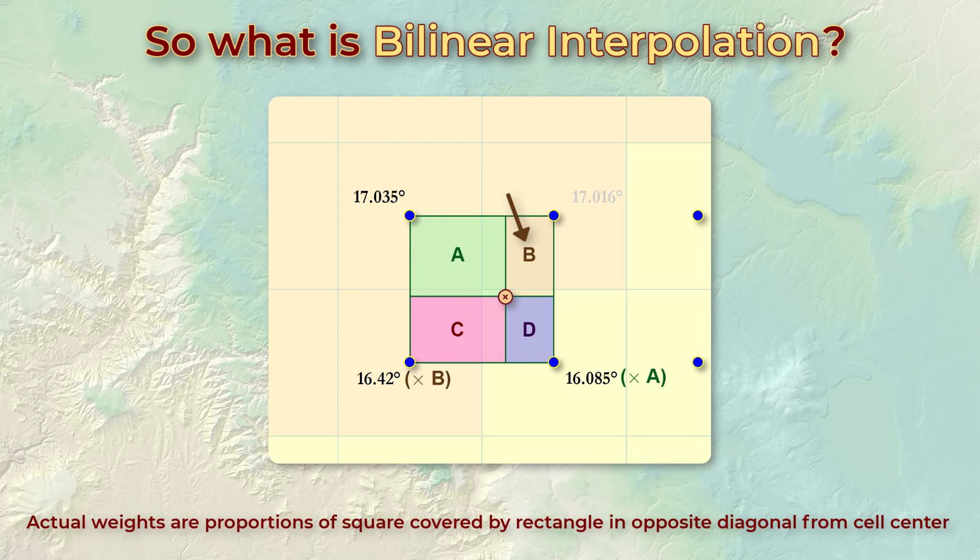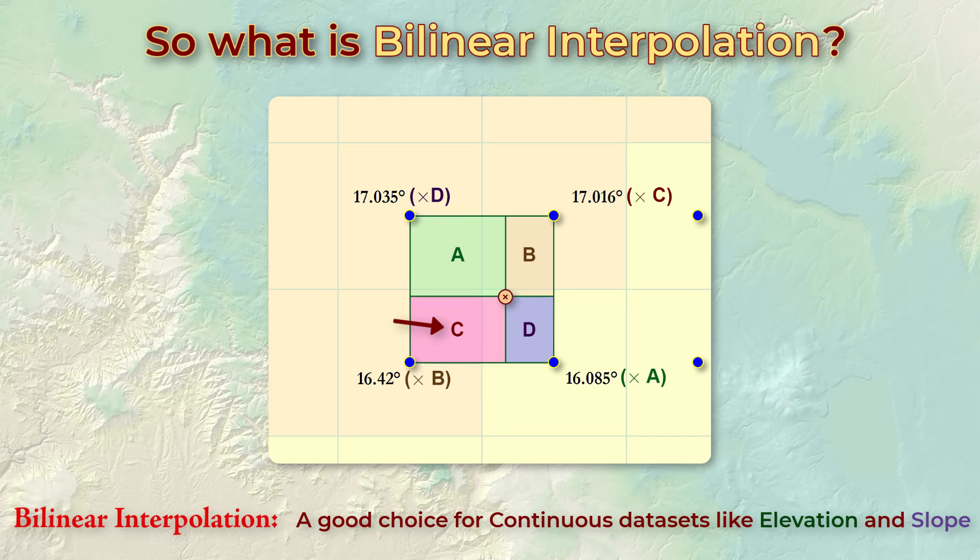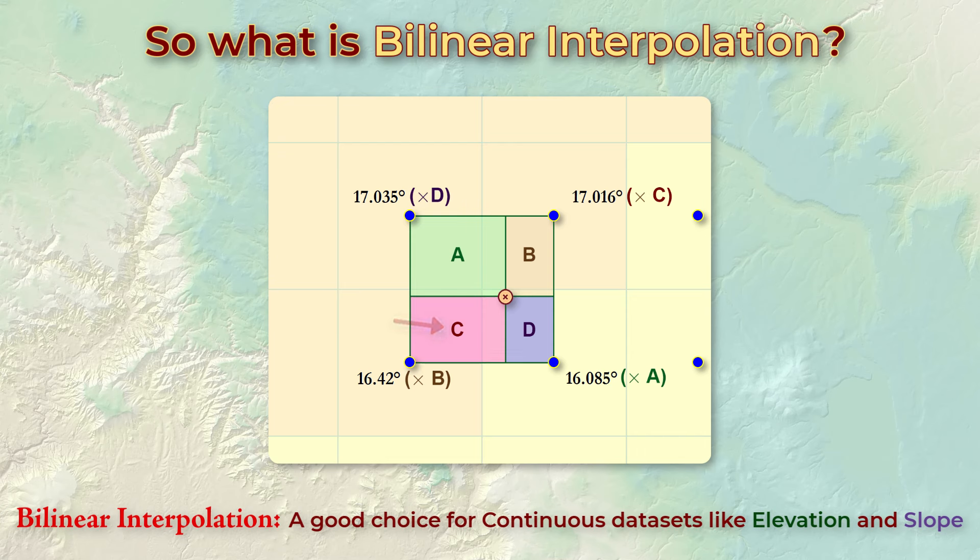The northwest slope would be weighted by rectangle D. And the northeast slope value would be weighted by rectangle C. Anyway, that's bilinear interpolation. It's often a good choice to use for continuous data like elevation, slope, curvature, and TPI.